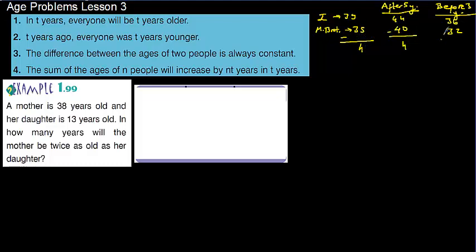After 5 years, again the difference is going to be 4 years. Before 6 years, again the difference is going to be 4 years between us. And the sum of the ages of N people will increase by N times T years in T years. The difference and the sum rule is going to work the same.